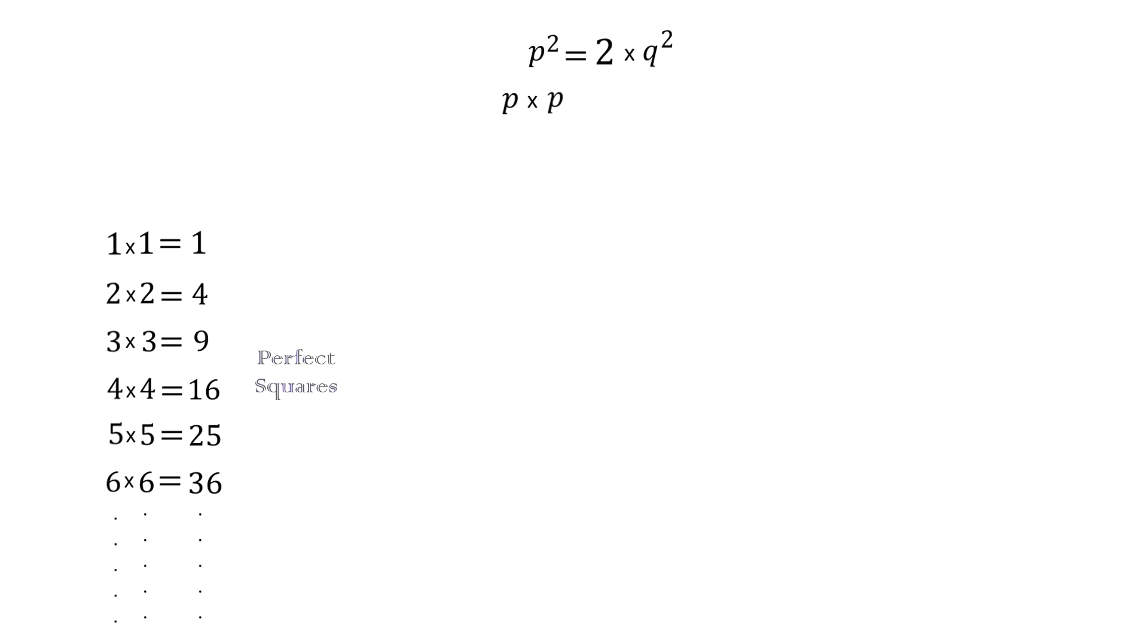Alright, what is the other side of this equation? That is, 2 multiplied by q square. As it follows, this pair of q's also indicate a perfect square. However, this pair is not alone as it is multiplied by 2. So, does this manipulate the perfect square in any way? Let us check it out then.